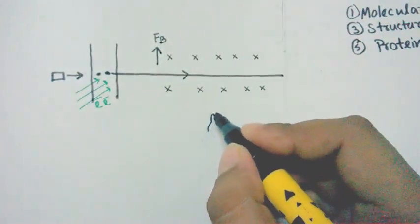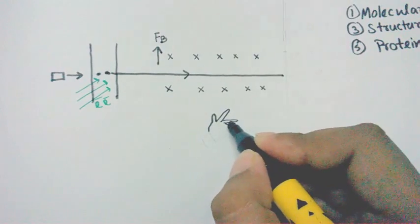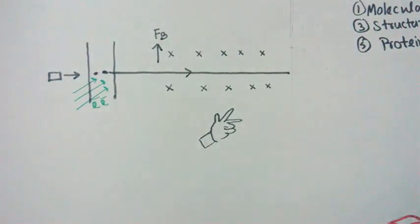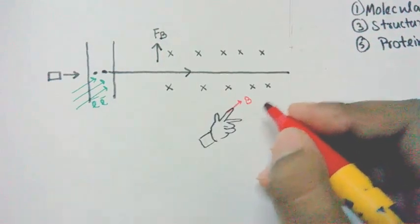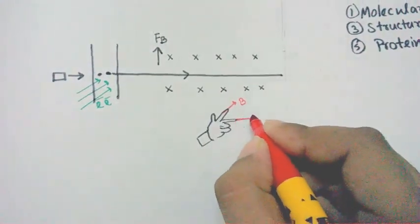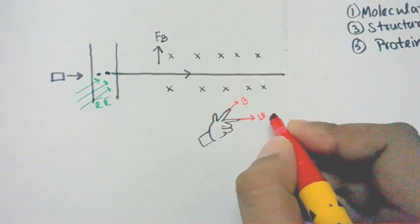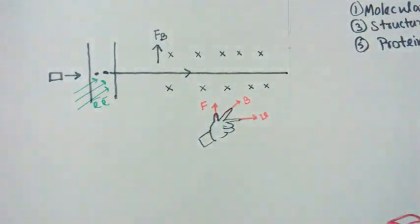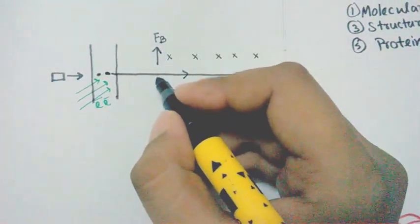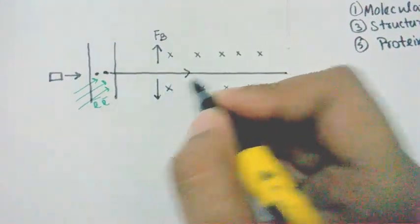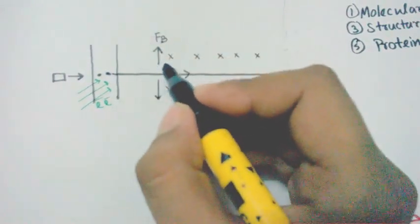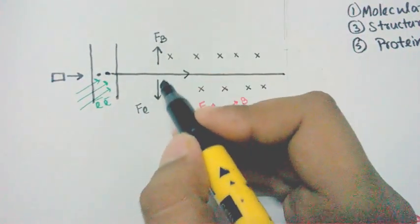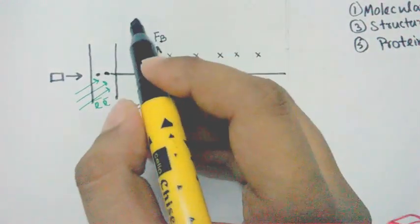To find the direction of the magnetic force, we apply the left-hand thumb rule. Take your index finger pointing in the direction of the magnetic field, your next finger pointing in the direction of the velocity of the ion, and your thumb points in the direction of the force. The force is directed upward. This magnetic force is balanced by another force due to the electrical field. These two forces are balanced in this region, which is called the velocity selector region.